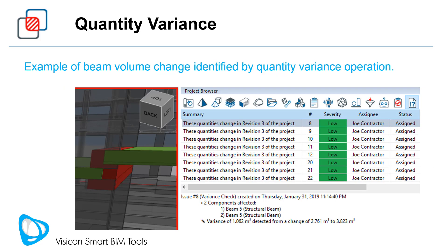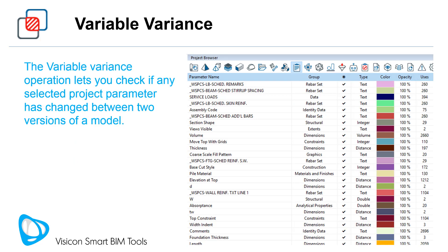We are looking at a list of issues created for a volume quantity variance. The components associated with each variance are linked to issues. The quantity variance for the selected structural beam is clearly shown to be an increase of 3.328 cubic meters of concrete.